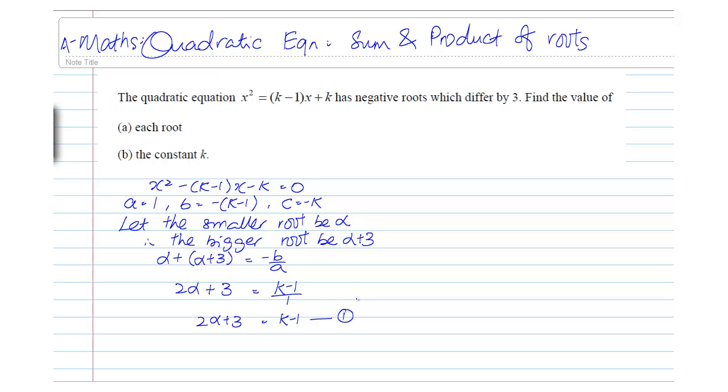The next equation that we will be forming will be about product of roots. Alpha times alpha plus 3 is equals to c over A.